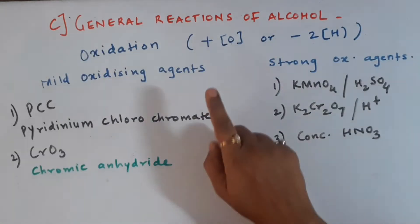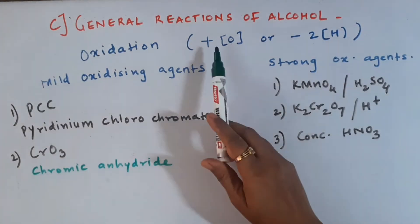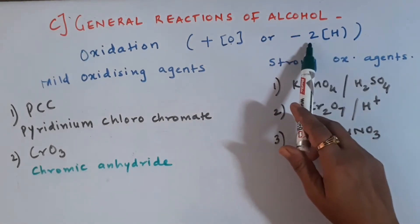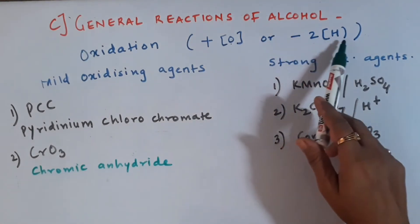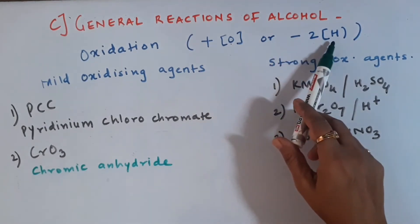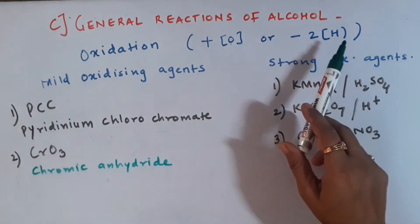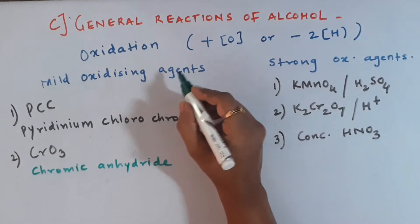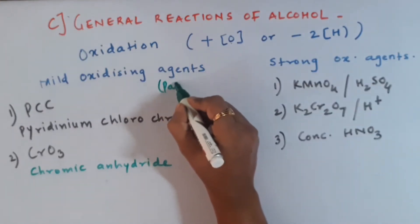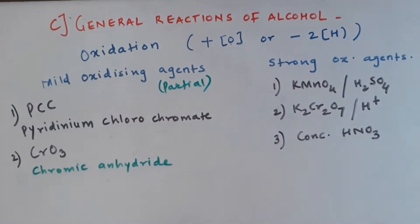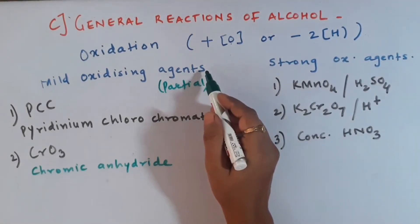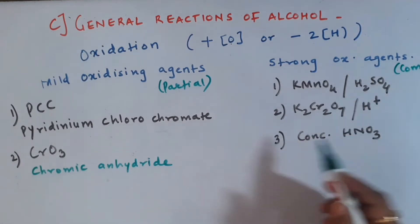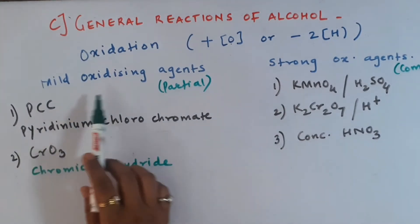The reaction we will be talking about first is oxidation. Oxidation is the addition of oxygen, or it can also be called removal of electropositive elements like hydrogen. You will find either of these two definitions in the case of oxidation of alcohols. We have two types of oxidizing agents depending on what reaction we want to carry out. For partial oxidation you use mild oxidizing agents, and for complete oxidation you use very strong oxidizing agents.